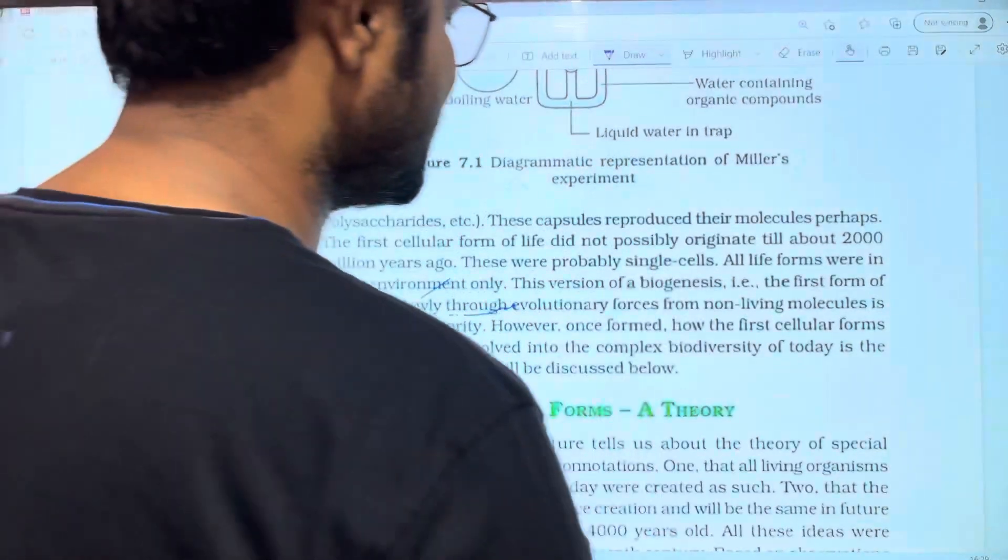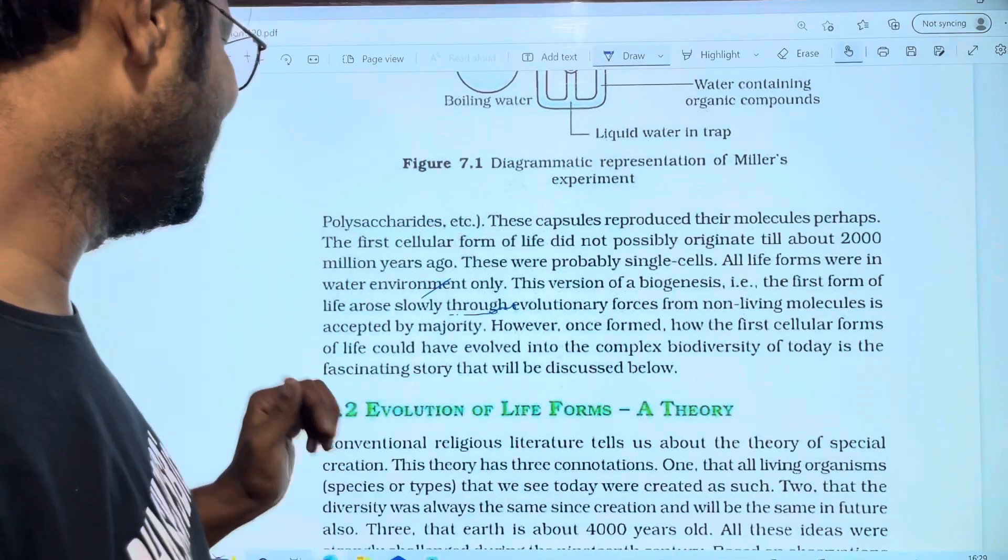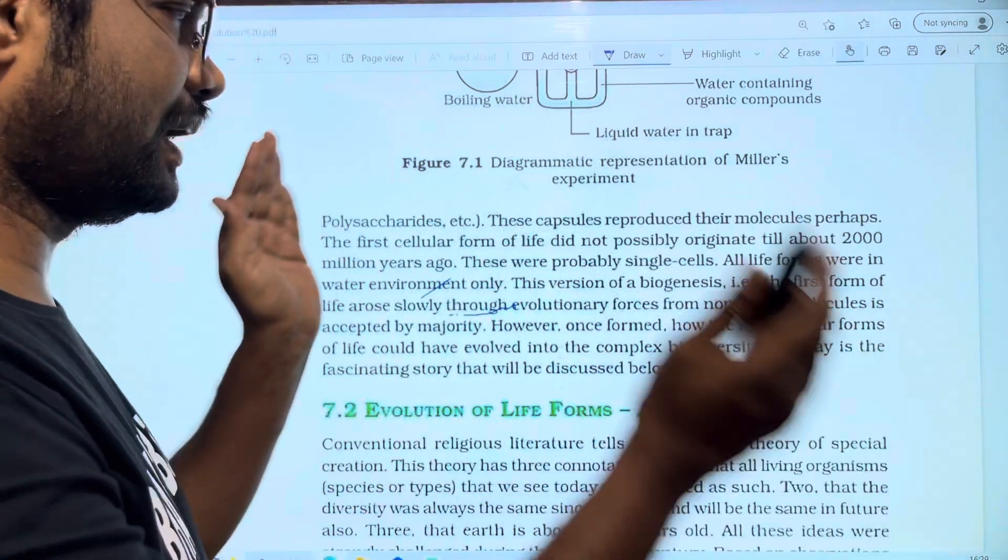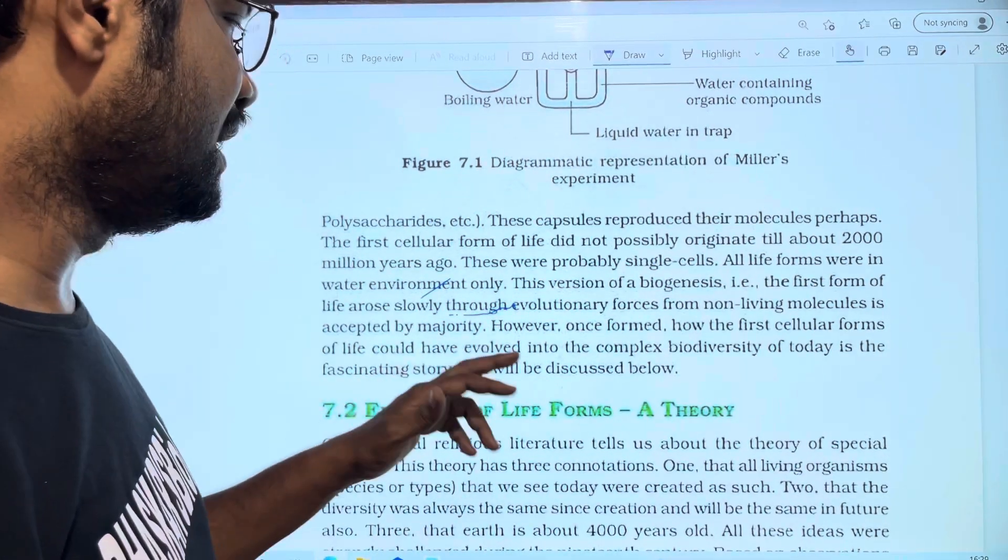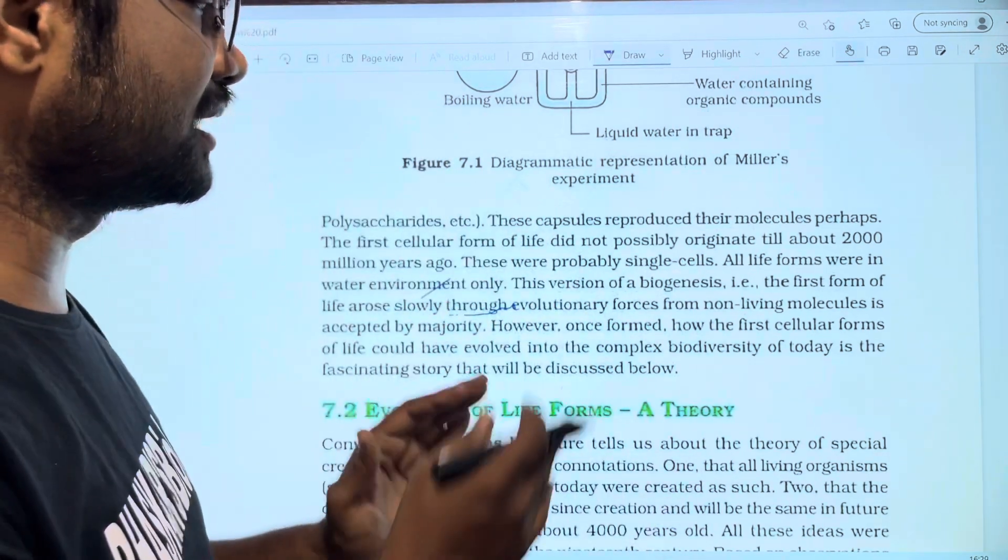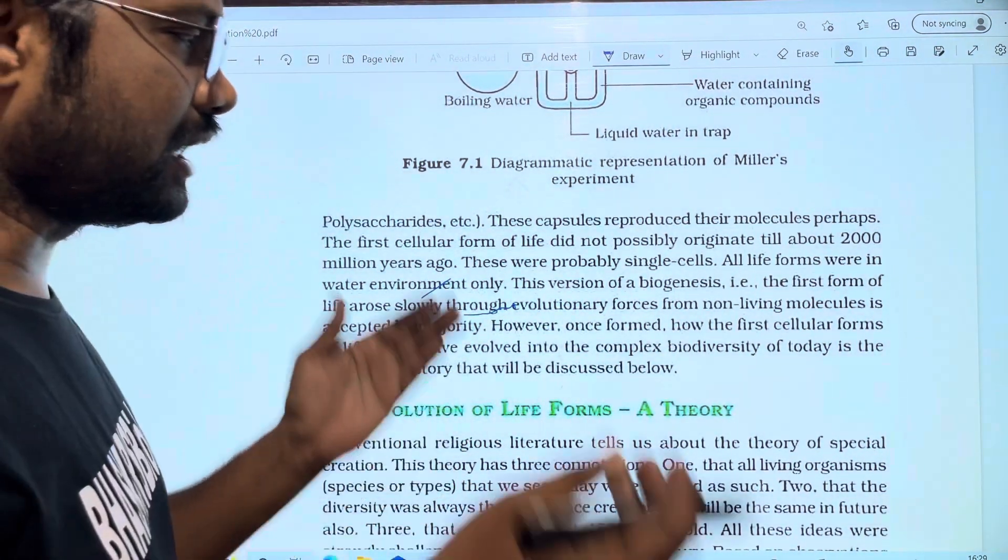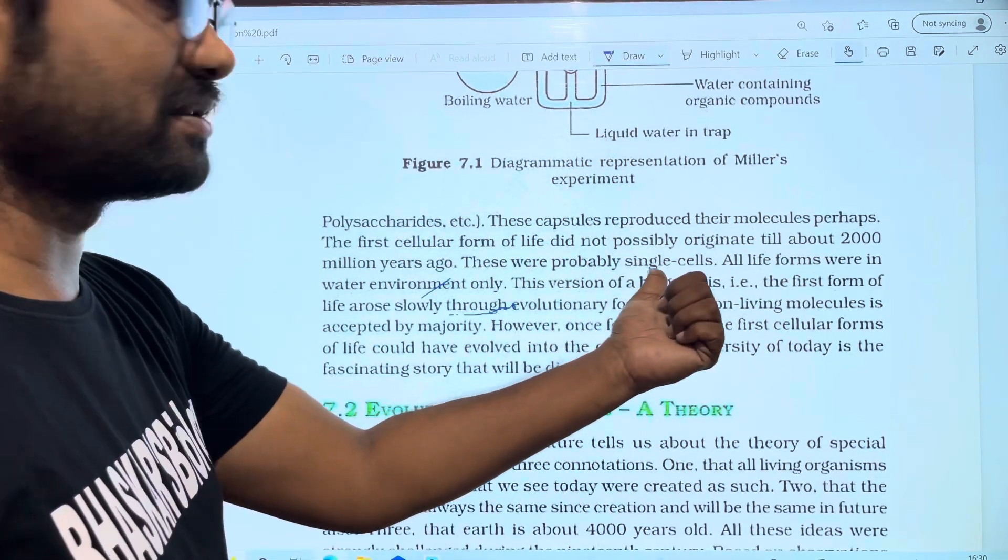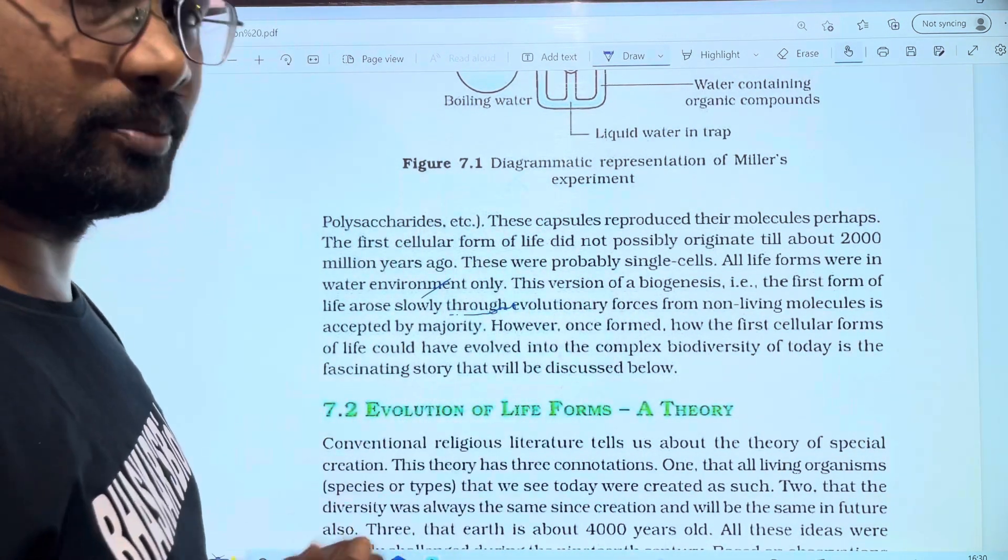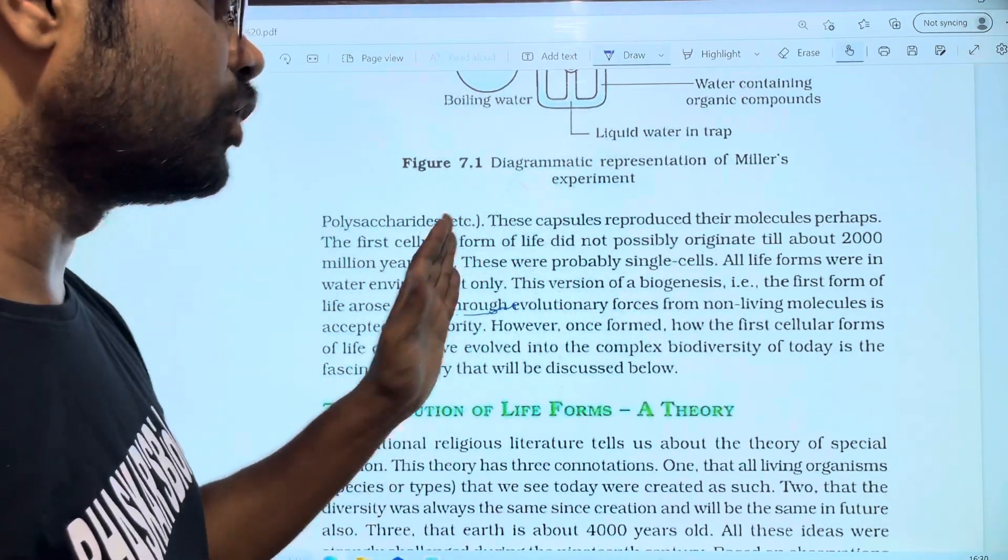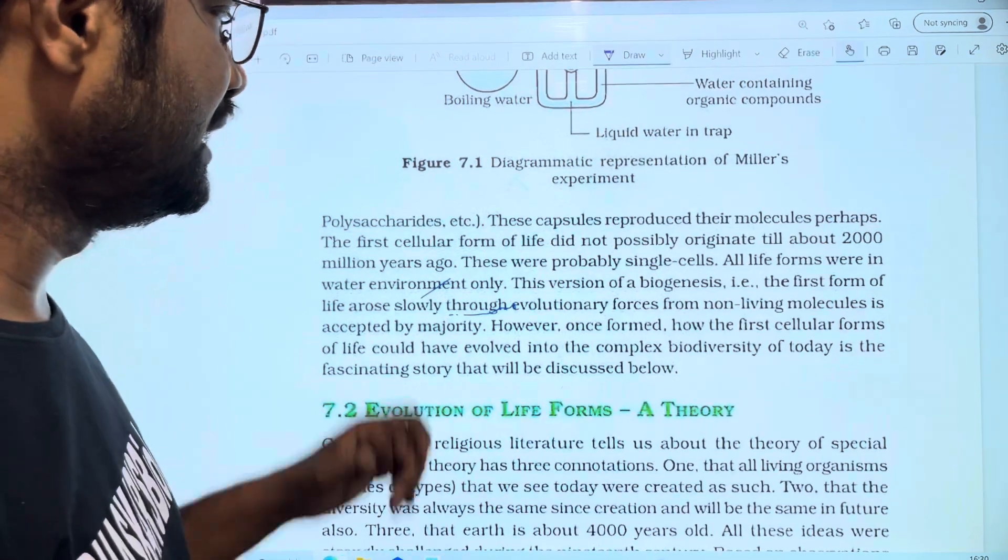This is the version of biogenesis. The first form of life slowly evolved from non-living molecules. Non-living molecules accumulated, then single cell organisms formed. However, once formed, how did the first cellular forms of life evolve into the complex biodiversity of today? Starting from a single cell, organisms evolved further into the biodiversity we see today. This fascinating story will be discussed below.